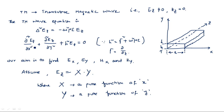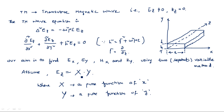Our aim is to find Ex, Ey, Hx, Hy using the two separate variable method, where X is a pure function of x and Y is a pure function of y. When we substitute Ez equals XY into the main equation, whichever factor like X is a pure function of x will remain in the differentiation and the remaining parameter will come out.